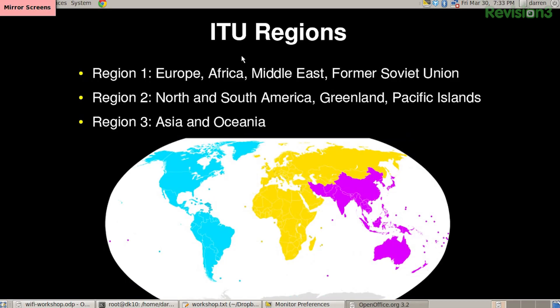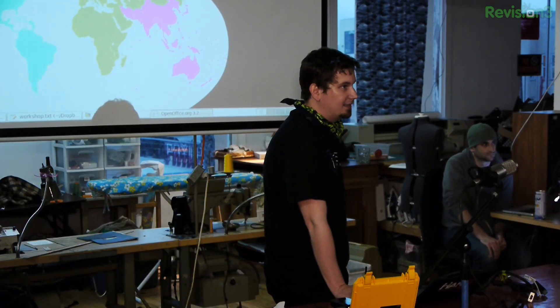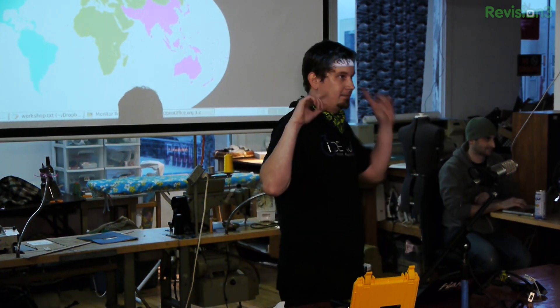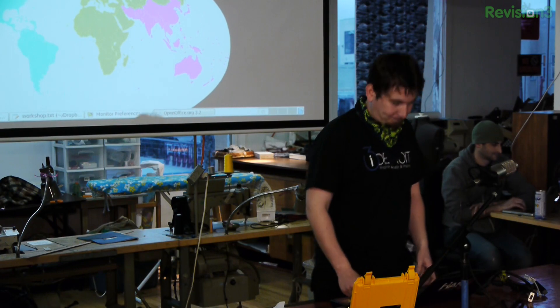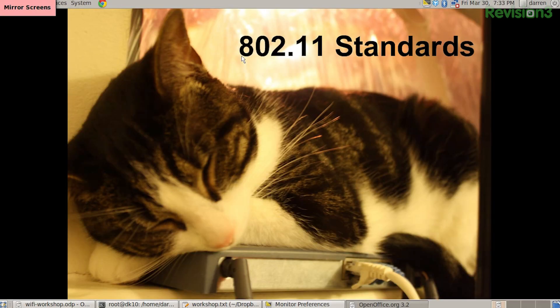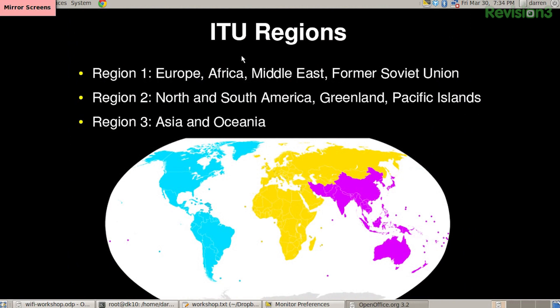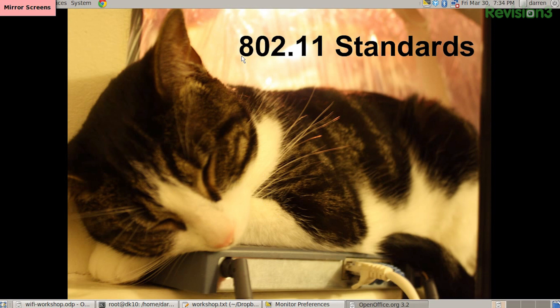The ITU sets up these different regions: one being Europe, Africa, the Middle East, and the former Soviet Union. Region 2 being here in North and South America, Greenland and the Pacific Islands, and then region 3, Asia and everywhere else. I bring this up because I mentioned that the 900 megahertz spectrum was only for region 2, which is North America. And that's how we transitioned to talking about 802.11 standards.